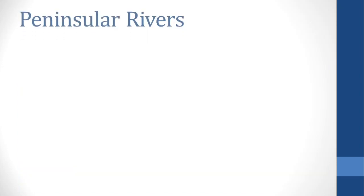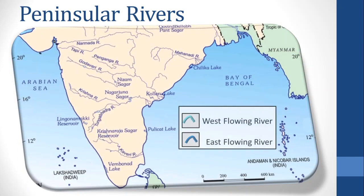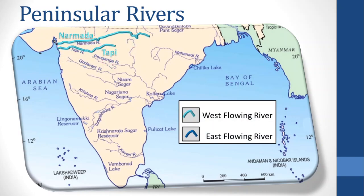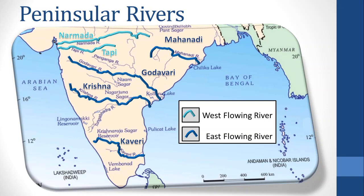Look at the map. West Flowing Rivers flow westward and fall into the Arabian Sea. East Flowing Rivers are shown by dark blue color — they flow eastward and fall into the Bay of Bengal. They are Mahanadi, Godavari, Krishna, and Kaveri.